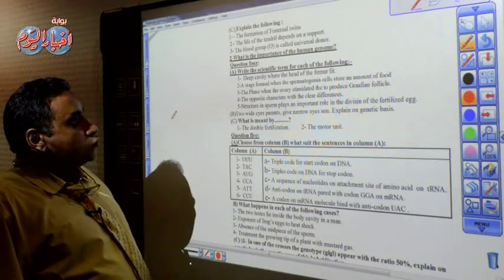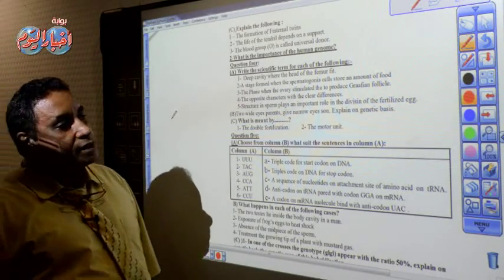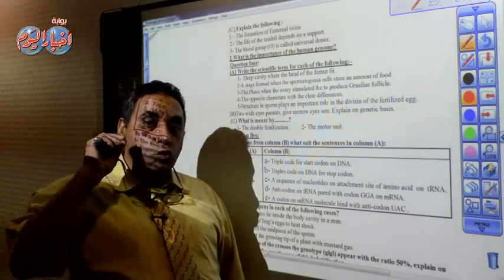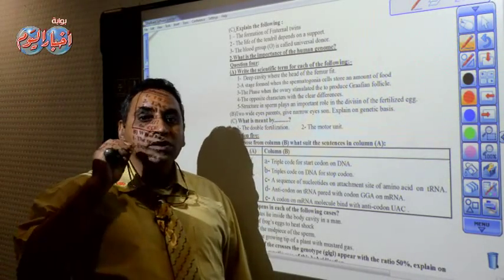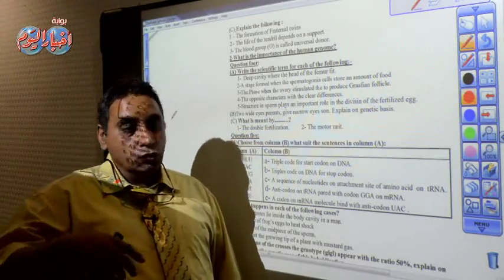Number five: structure in the sperm play an important role in the division of the fertilized egg. That's the neck region which contains the centrosome. So the right answer is the centrosome or the centrioles that facilitate or help the zygote to divide.